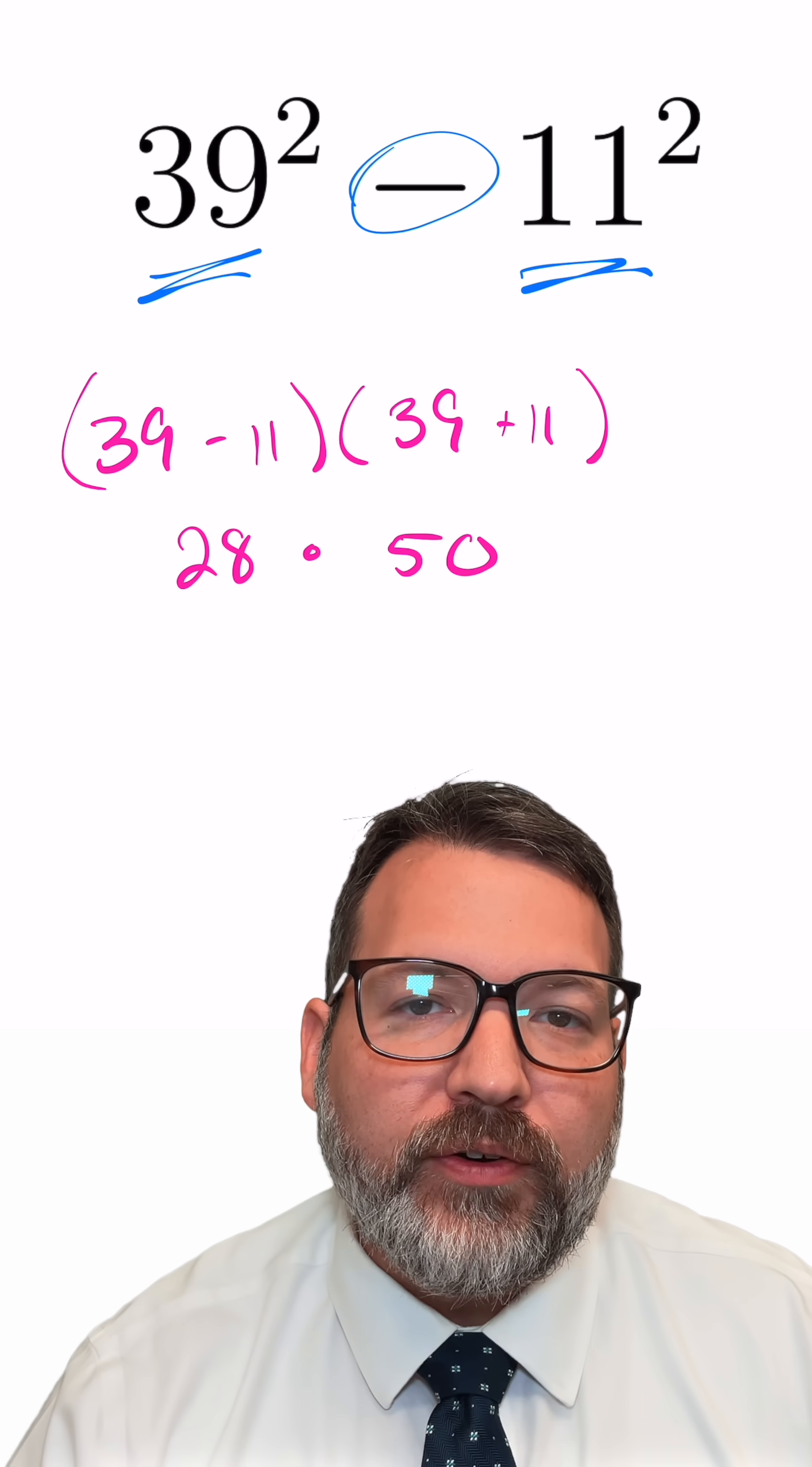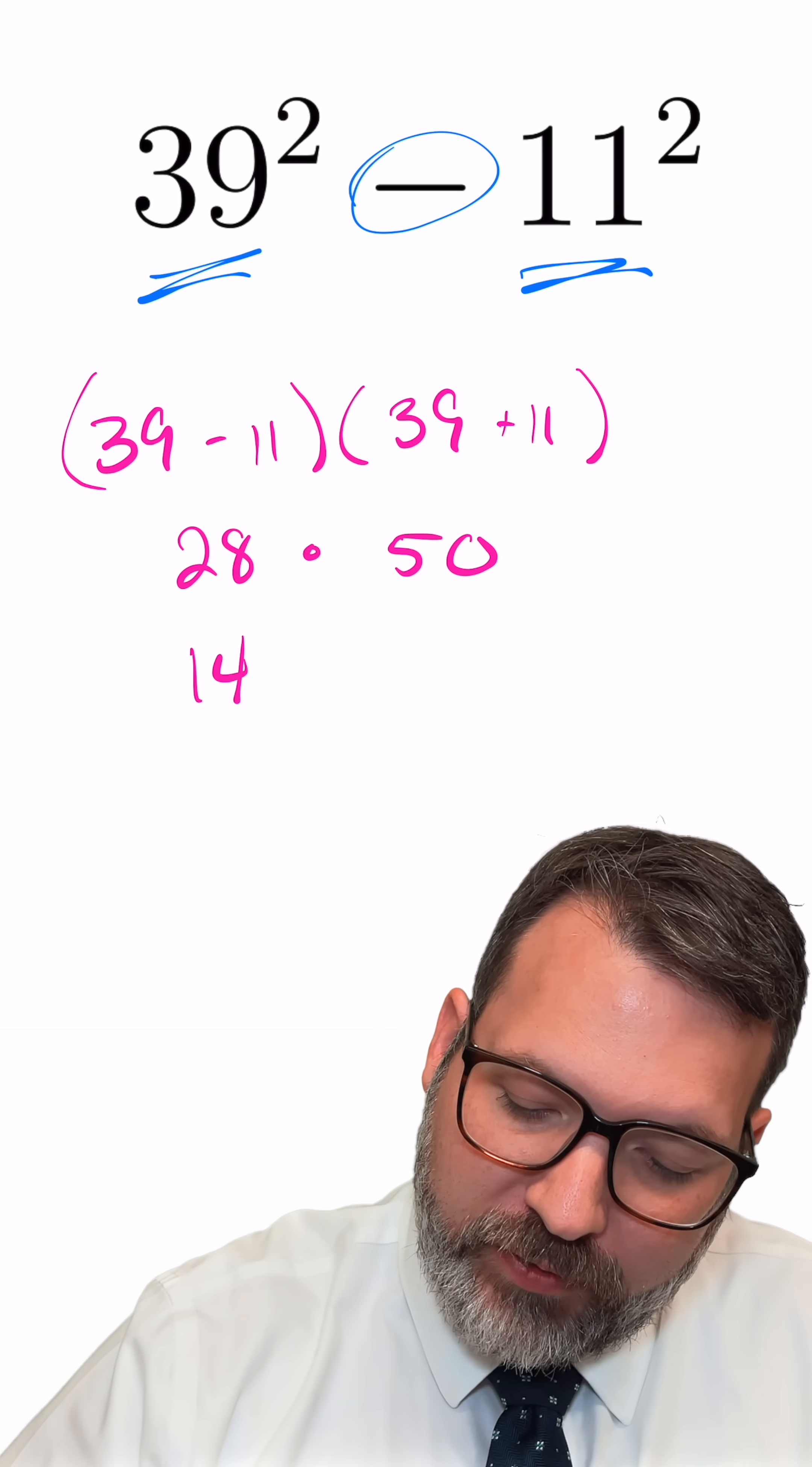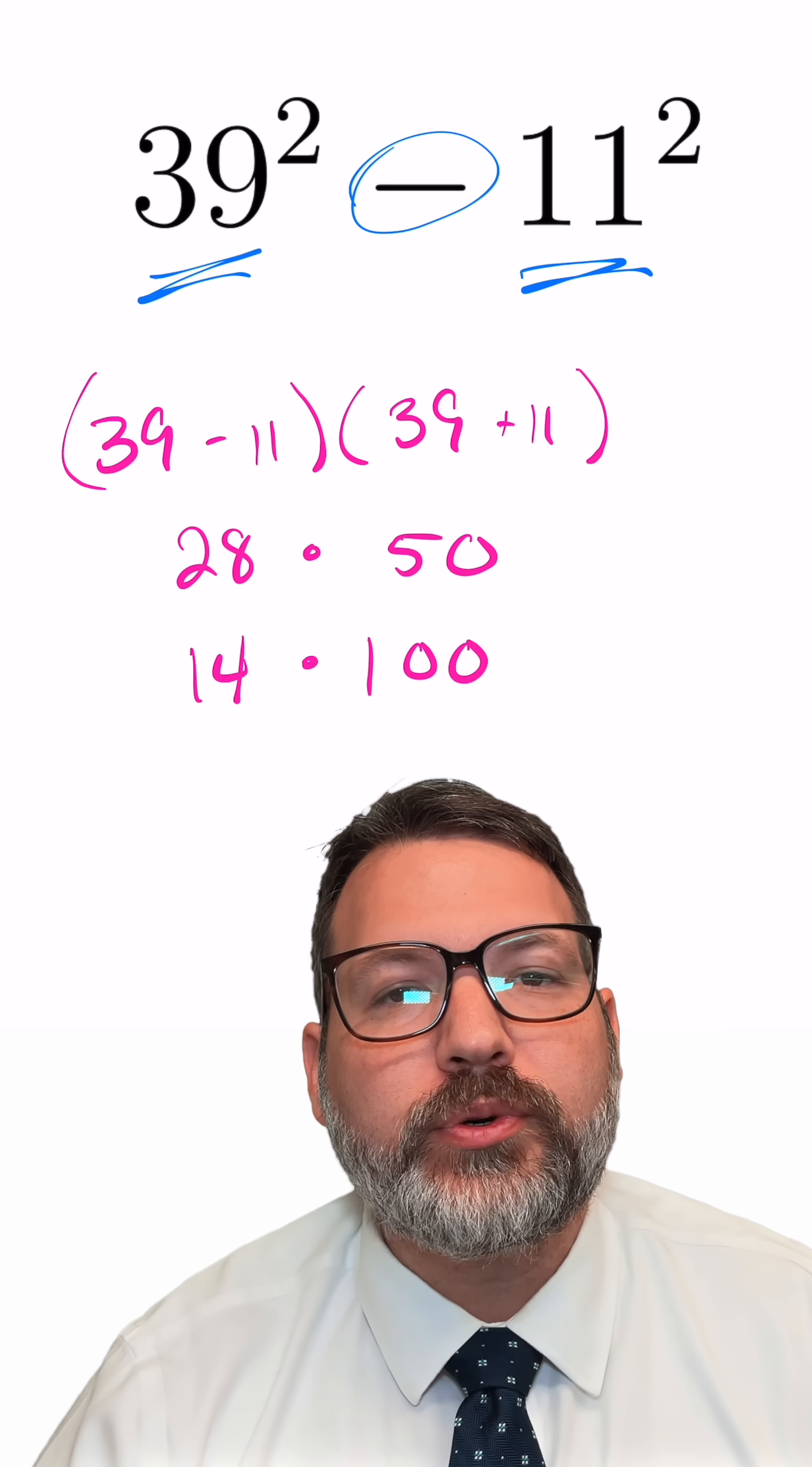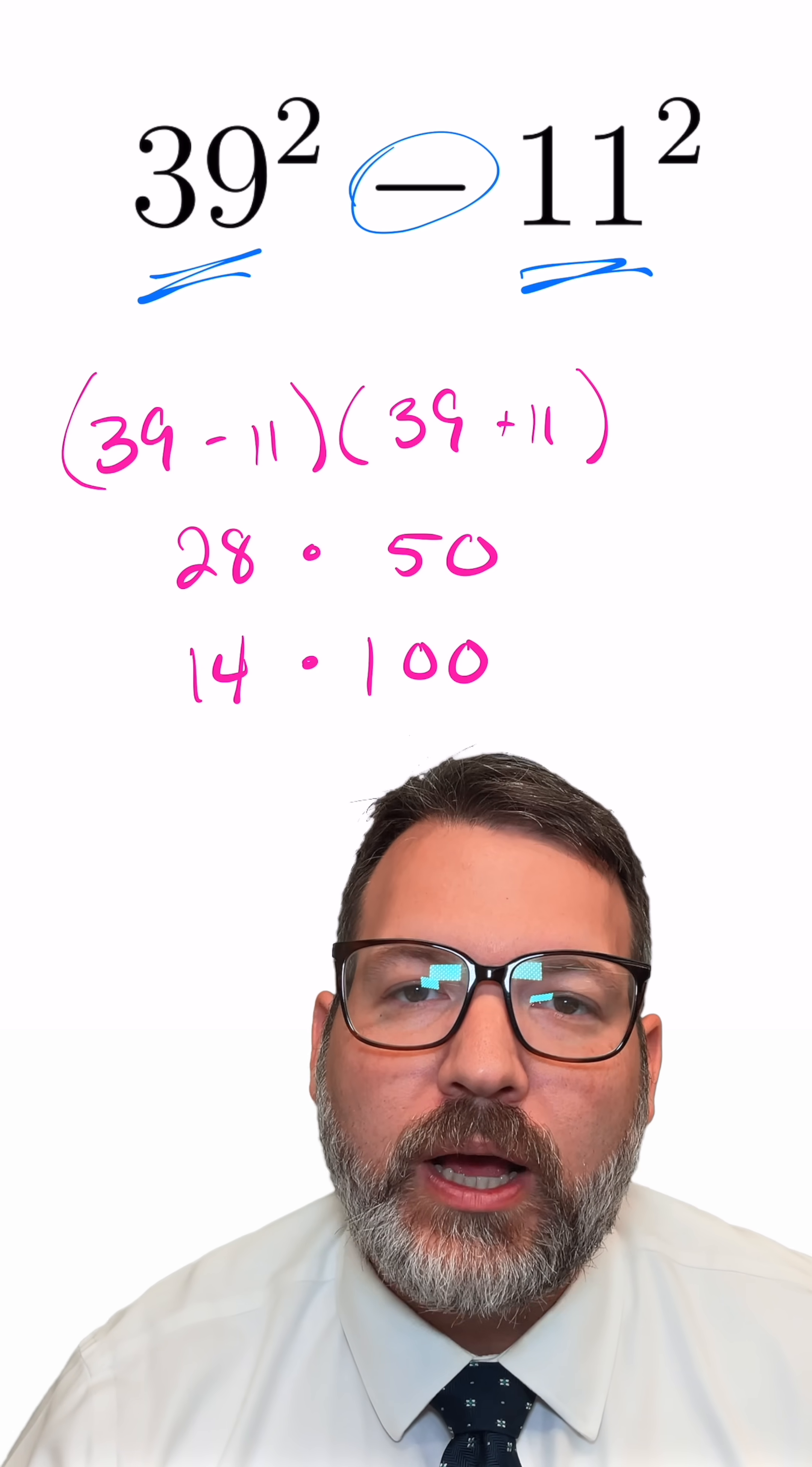28 times 50 we can compute in a variety of ways. My personal favorite is something called the double and half trick, and 14 times 100 is indeed 1400.